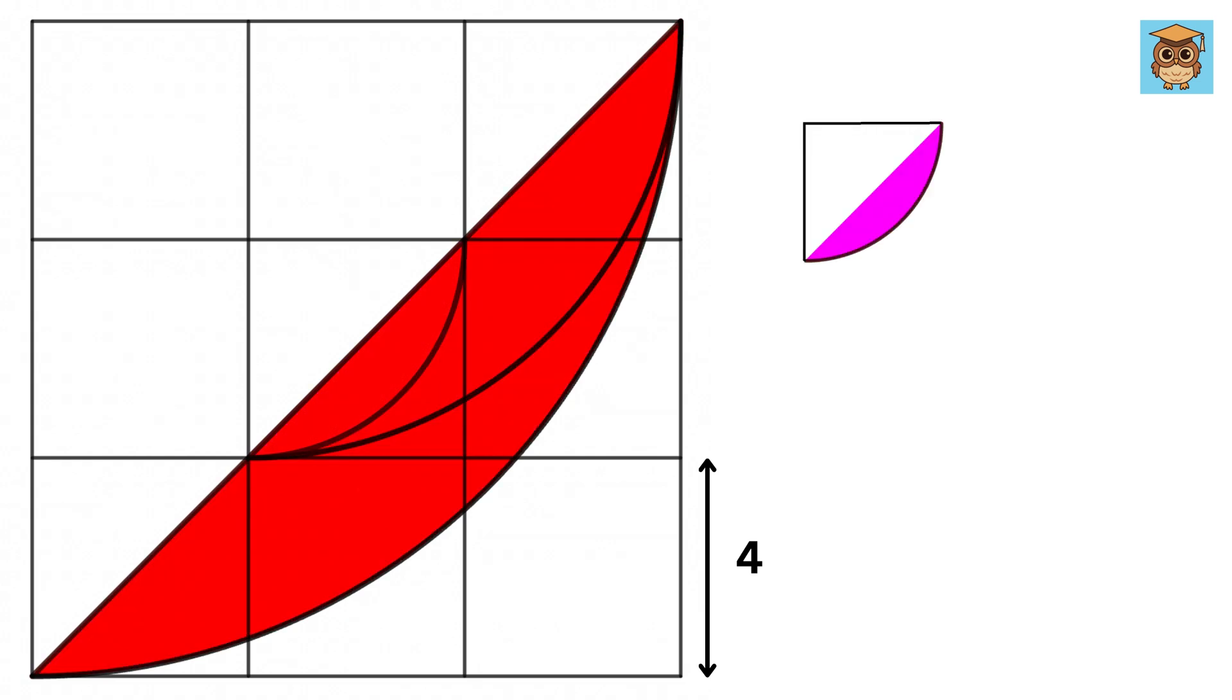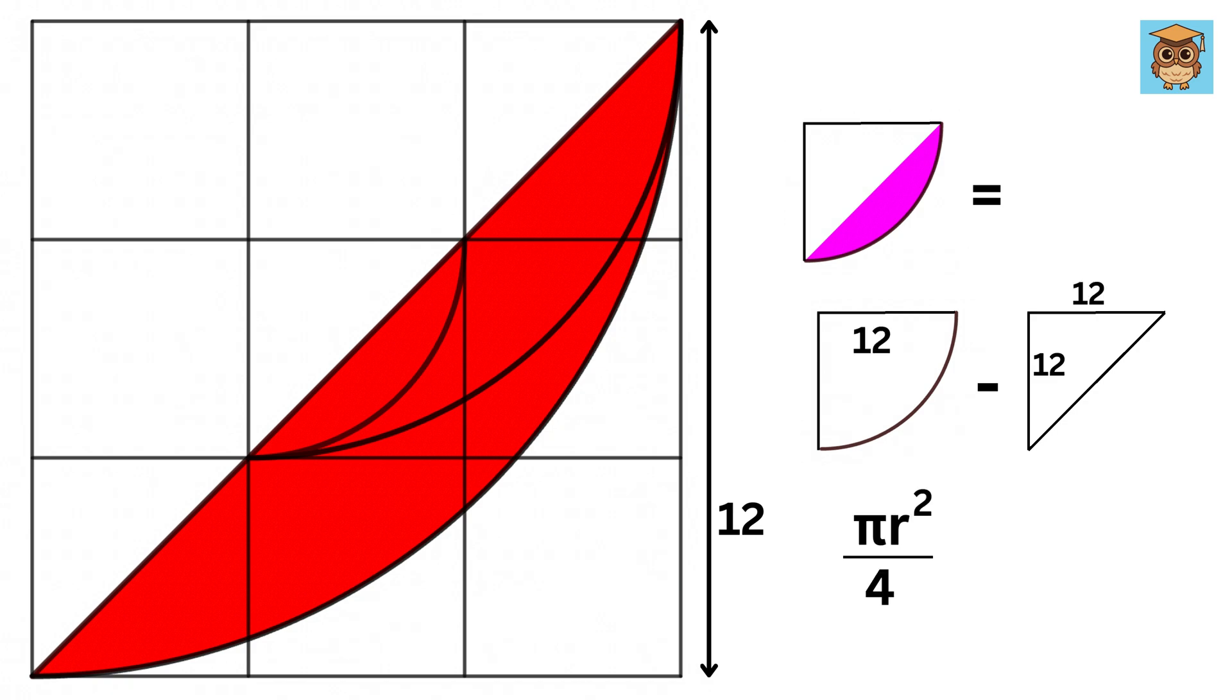Now, for each segment, we can write their area as the area of the quarter circle minus the area of the triangle. Now, this is 4, so this will be 12. So the radius of this quarter circle is 12. Hence, its area will be pi r square by 4. And keeping r as 12, we get 36 pi. And area of this triangle will be 12 times 12 by 2 or 72. So this segment's area is 36 pi minus 72.